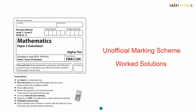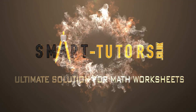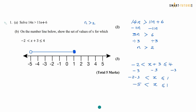Now let's look at the GCSE 2019 paper 2. Question number 1: Solve 14N greater than 11N plus 6. It's a linear inequality. So 14N greater than 11N plus 6 — take away 11N from both sides. You end up with 3N greater than 6. Divide by 3 on both sides, so N greater than 2. That is the answer for the first question — easy 2 marks.